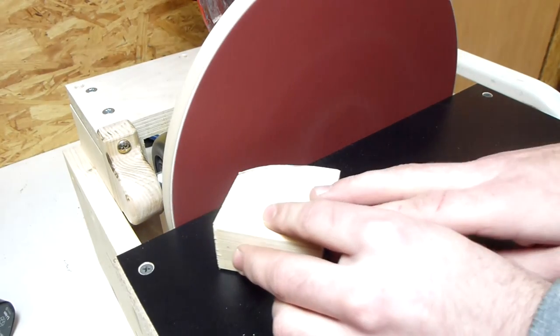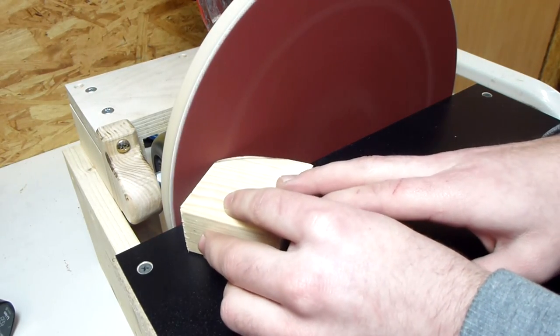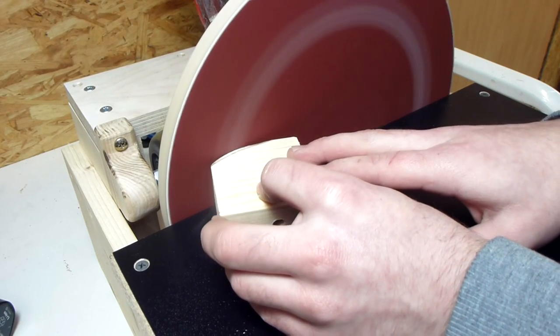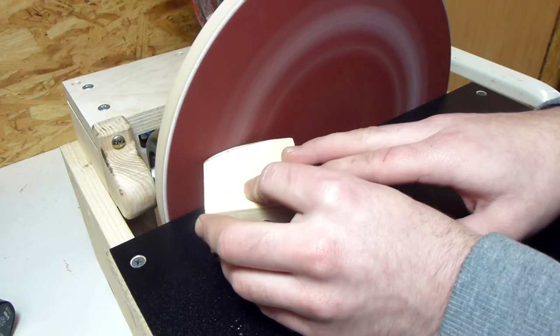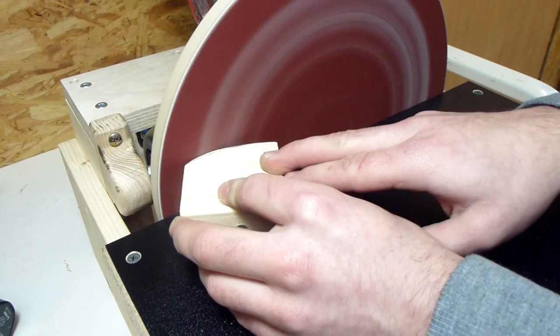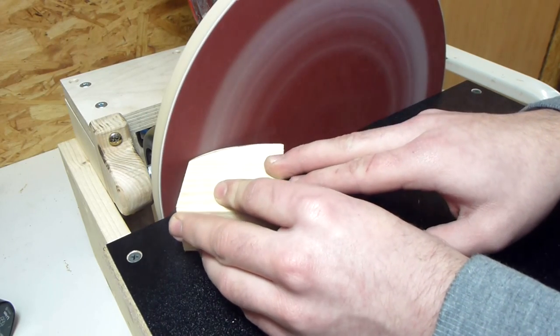And then it was time to do the first sanding test. The 60 grit paper makes a lot of dust pretty quick so I definitely need to hook up dust collection.